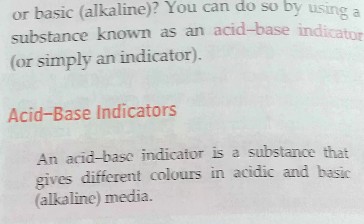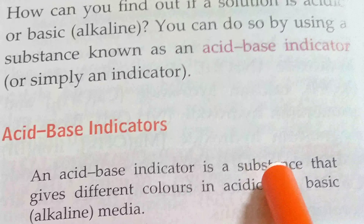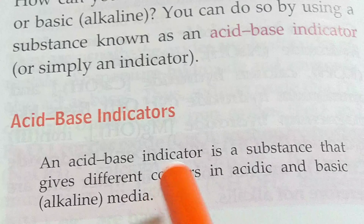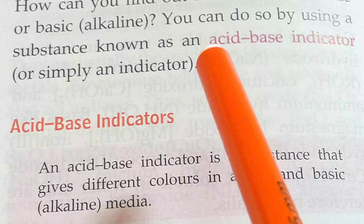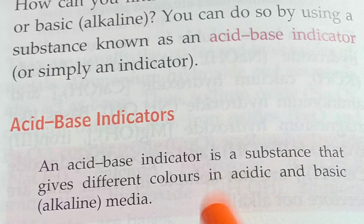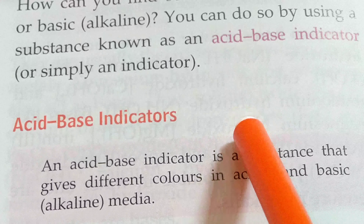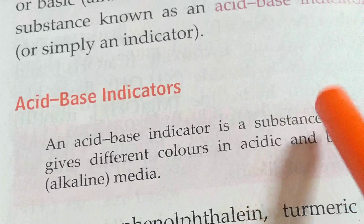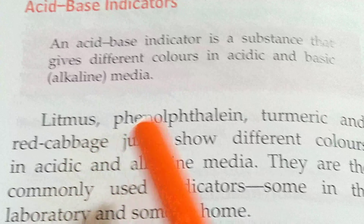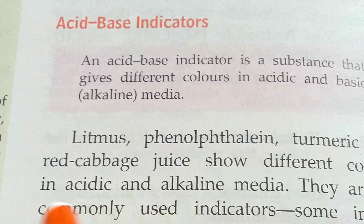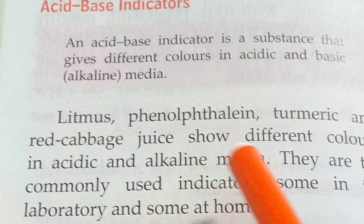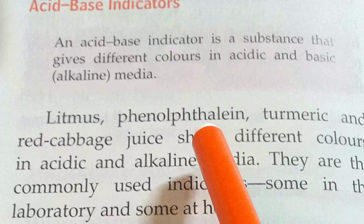Acid-base indicators. An acid-base indicator is a substance that gives different colors in acidic and basic media. It is used for indicating the different colors of acid and basic media. Like litmus paper, phenolphthalein, turmeric, and red cabbage juice show different colors in acidic and alkaline media. So these are examples of indicators.